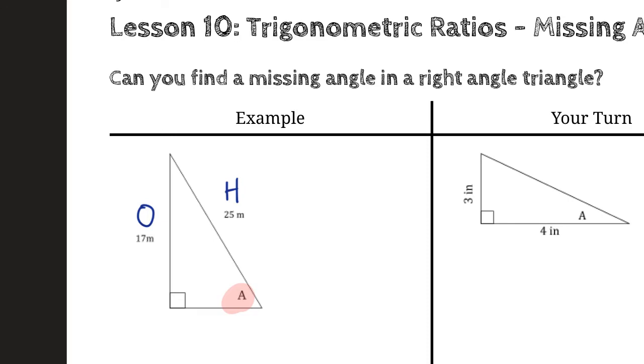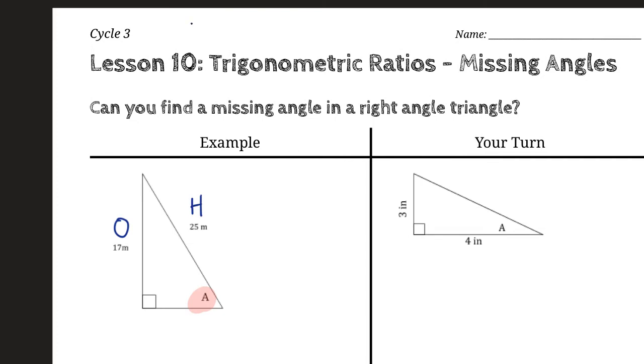So which one of the trig ratios should we use? This is the thing we like to always write at the top of our page: SOHCAHTOA. Because this will tell us which ratio to use. So we're looking for the one that has O and H in it, and if you look, sine has O and H in it. So remember, our sine of angle A is equal to opposite over hypotenuse. That's what the O and the H mean.